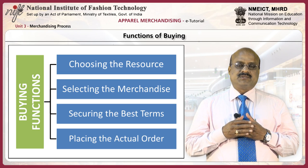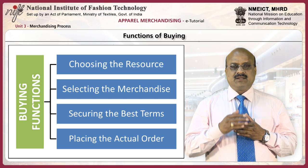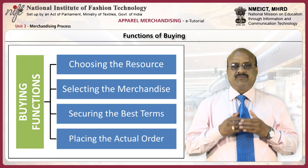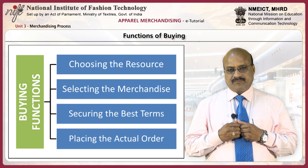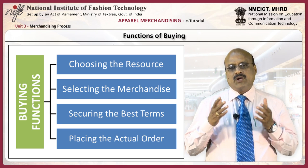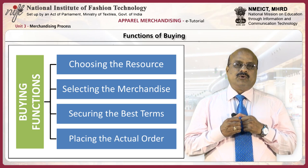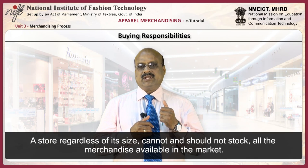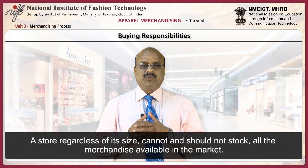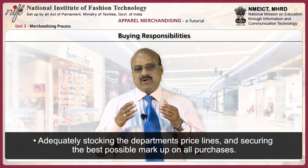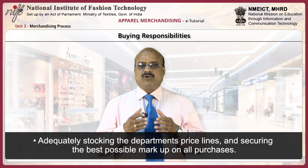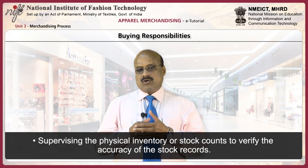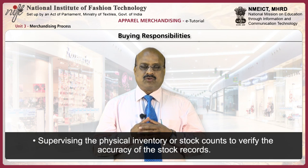Buying involves these functions: first, choosing the resource; second, selecting the merchandise; third, securing the best terms; and fourth, the actual placing of the order. The buyer is responsible for not only what to buy and when to buy, but also where to buy and how much to spend. Buying responsibilities include establishing and maintaining effective buying relationships with vendors, adequately stocking the department price lines and securing the best possible markup on all purchases, and supervising the physical inventory or stock counts to verify the accuracy of the stock records.